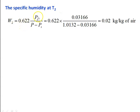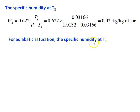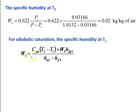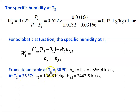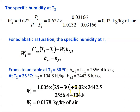Specific humidity at T2: W2 = 0.622 × Ps / (P − Ps) = 0.622 × 0.03166 / (1.0132 − 0.03166) = 0.02 kg/kg of air. For the adiabatic saturation process, W1 = Cpa × (T2 − T1) + W2 × HFG2 / (HW1 − HF2). From steam table at T1 = 30°C: HG1 = 2556.4 kJ/kg; at T2 = 25°C: HF2 = 104.8 kJ/kg, HFG2 = 2442.5 kJ/kg. Substituting all values gives W1 = 0.0178 kg/kg of air.